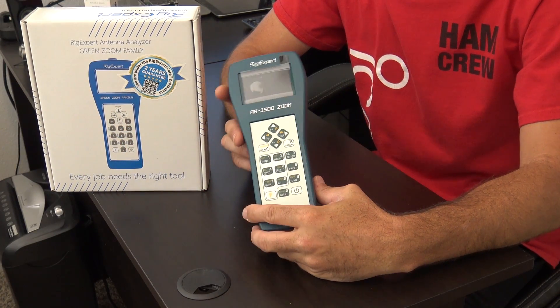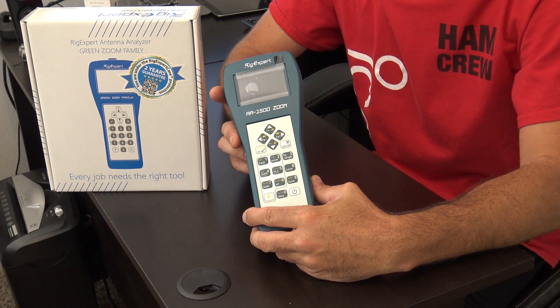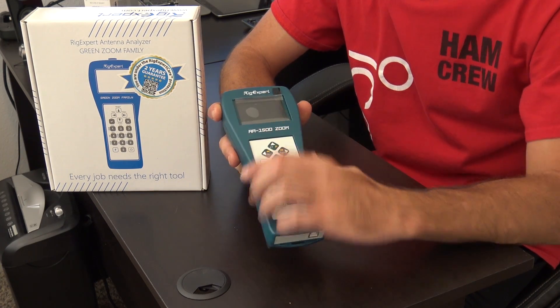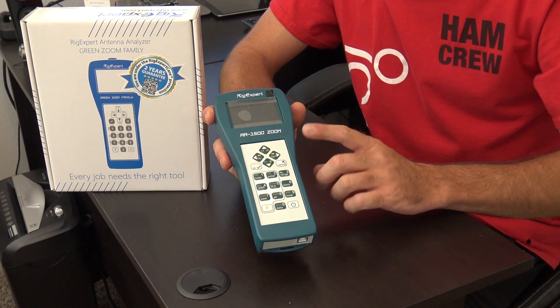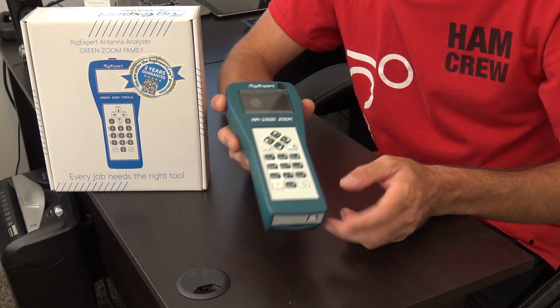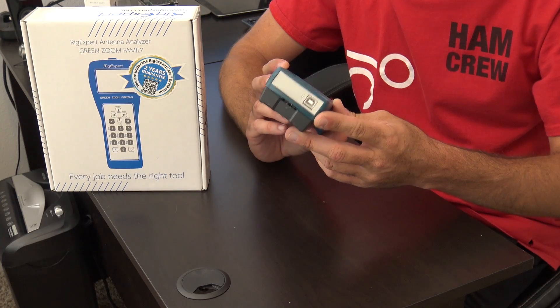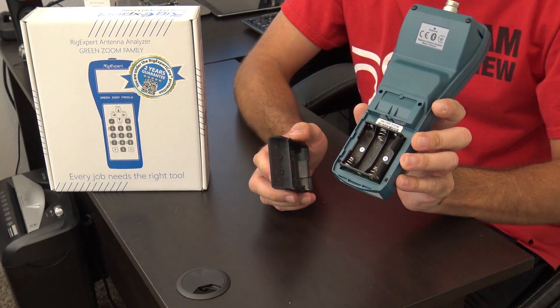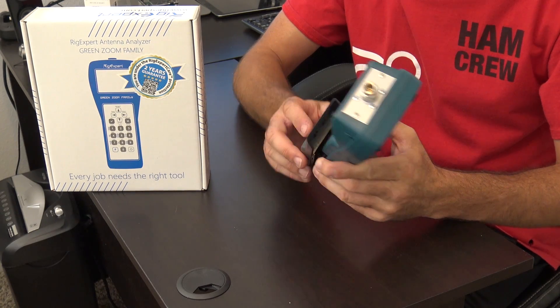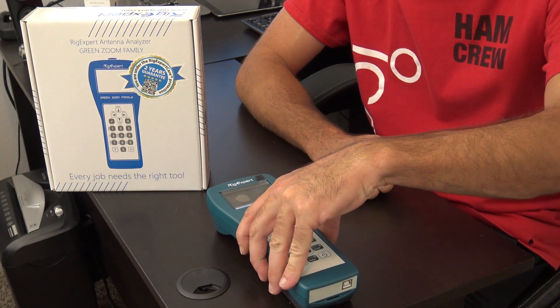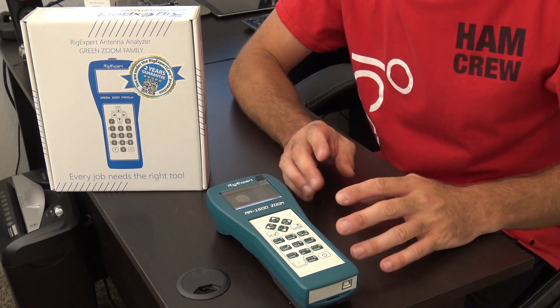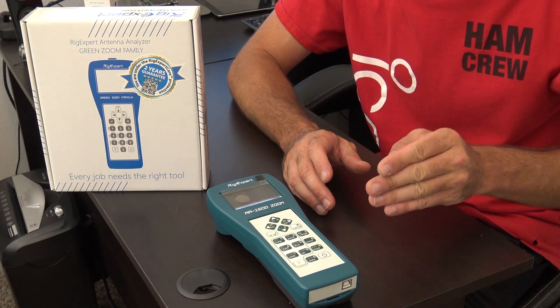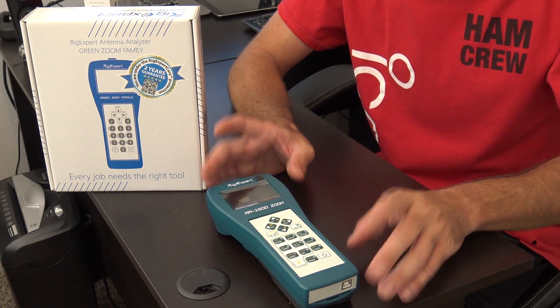This one here looks like the previous model in the green family of antenna analyzers, but that's not the case. This is the AA1500 Zoom, and not only does it do from DC to 1500 megahertz with USB connectivity on the bottom, it comes with a USB cable, it's got the N connector on top. It does take three AA batteries, but it's got features that you can sweep an entire band and zoom in right to where you want to see, and everything about that plot on this chart is on the AA1500.